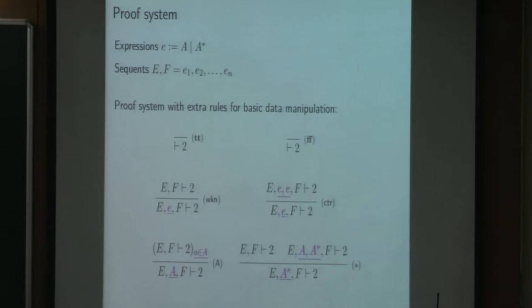And so we have a rule for the letters, which is a disjunction of cases, which letter it is on the alphabet. And so it has as many premises as a number of letters in the alphabet. And we have one rule for the star, which corresponds to unrolling the fixed point that the star represents. So either the word is empty and it corresponds to the left premise, or it is not. And then we get a letter and the remainder of the word A star to the right premise.